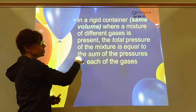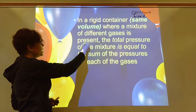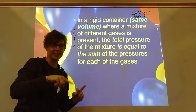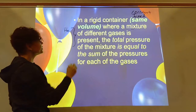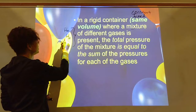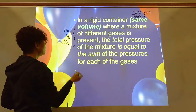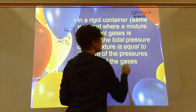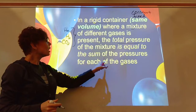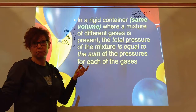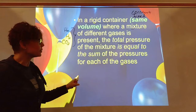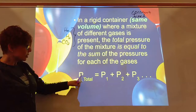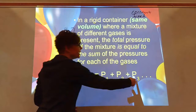In that rigid container we have a mixture of different gases, and it makes no difference what those gases are — it could be helium, hydrogen, carbon dioxide, water vapor, carbon tetrachloride. The total pressure is going to be equal to the sum of each individual gas pressure. The total is equal to the sum of its parts — that's literally what Dalton's law says.